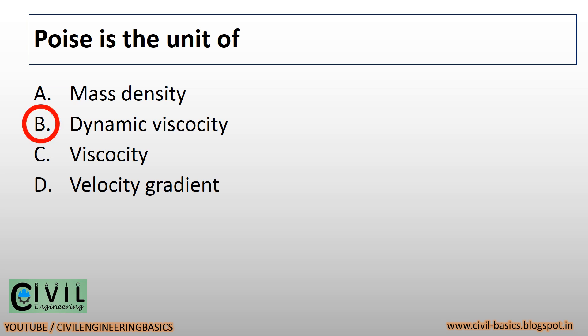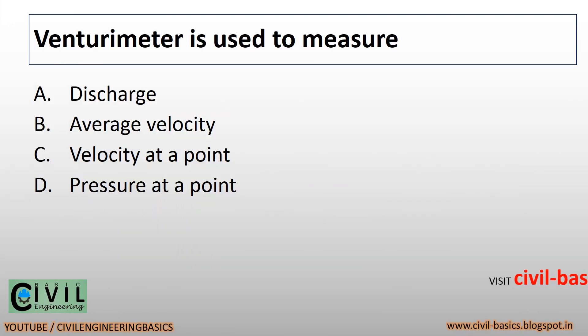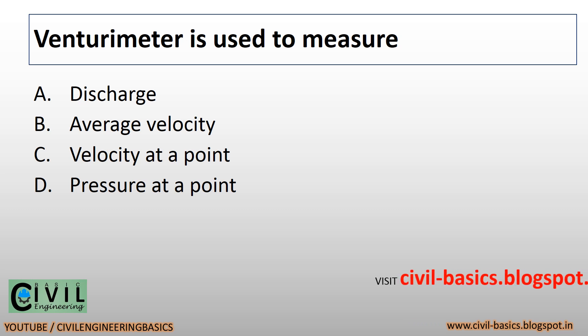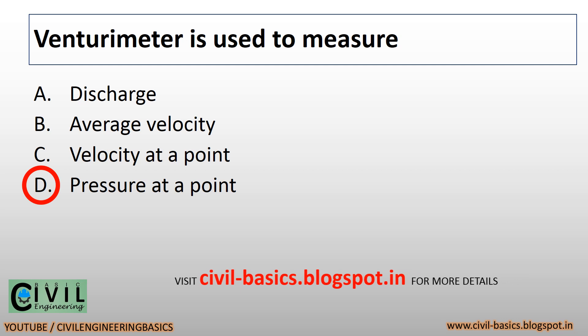Poise is the unit of dynamic viscosity. Venturimeter is used to measure pressure at a point.